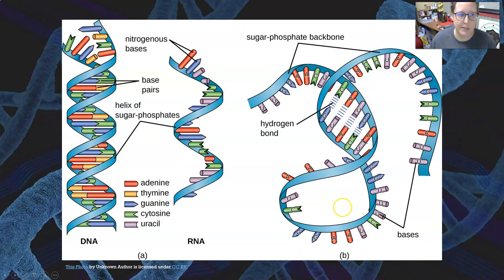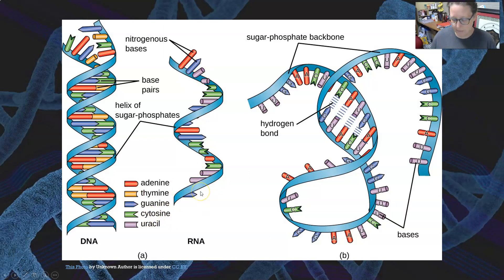Here's a representation of DNA when it's not charged, and then this one is a single-stranded RNA. You can see that uracil is in RNA whereas thymine is in DNA.